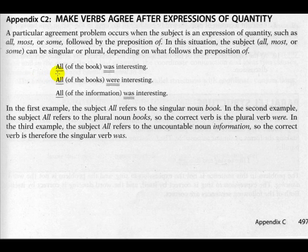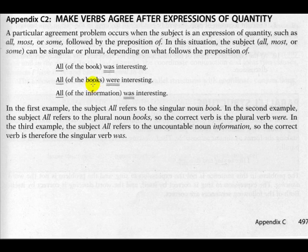We have the expression of quantity 'all,' the prepositional phrase 'of the book.' The book is the subject of this sentence, and the verb 'was' is singular — since 'a book' is singular, the verb is singular. In another example using 'all,' we have 'of the books' — books is plural, so the verb 'were interesting' is plural.